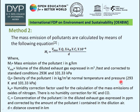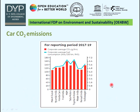Method 2 calculates mass emission of pollutants using the formula: Mi = V × Qi × KH × CI × 10⁻² / T, where Mi is mass, V is volume, Qi is density, KH is the humidity correction factor, CI is the concentration of the pollutant, and D is the distance covered in km.